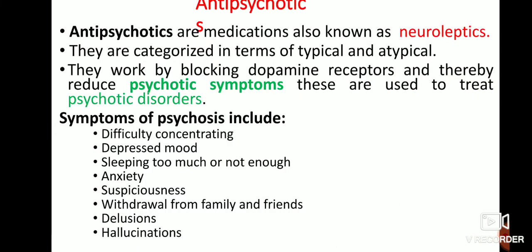Antipsychotic drugs are medications also known as neuroleptics. They are categorized in terms of typical and atypical. This type of drug acts by blocking dopamine receptors and thereby reduces psychotic symptoms. The main concept is that this type of drug blocks the dopamine receptors.